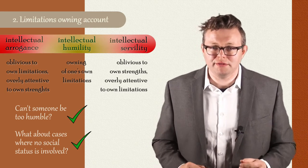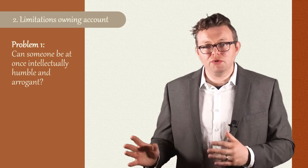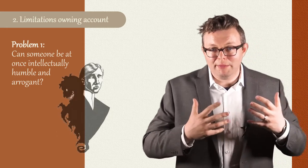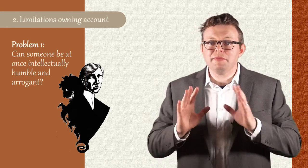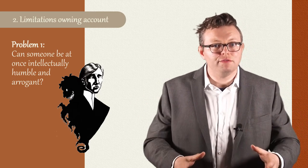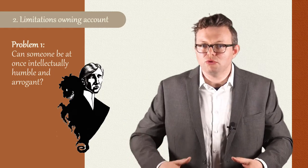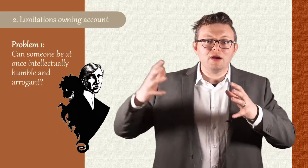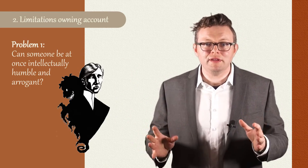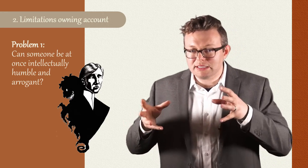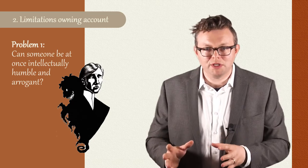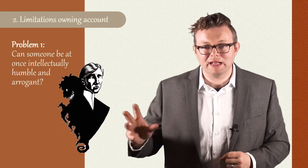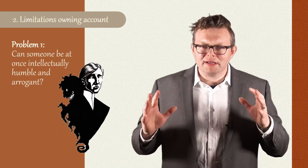Let's consider two of these worries. The first is that the limitations-owning account of intellectual humility allows people to be intellectually humble and intellectually arrogant about the same thing at the exact same time. To see this, just imagine someone who is duly attentive to and owning of her intellectual limitations — so she's intellectually humble — but radically overestimates and brags about her corresponding intellectual strengths. Insofar as someone is intellectually arrogant if they radically overestimate and brag about their strengths, then it looks like the limitations-owning account leads to this very odd conclusion: it's possible for someone to be at once intellectually humble and intellectually arrogant about the same thing at the exact same time. And that might seem like a reason to reject the view.